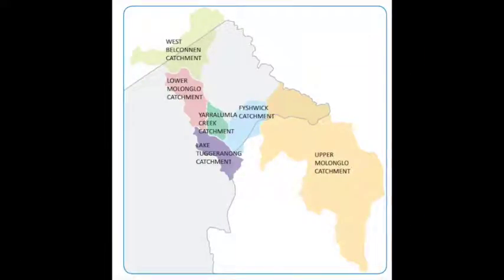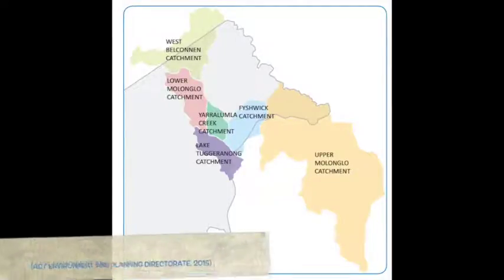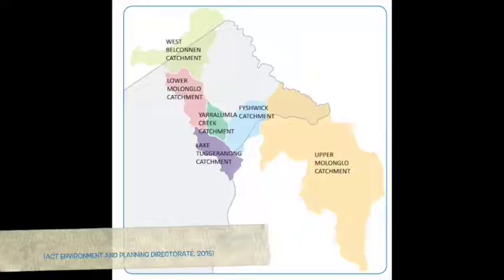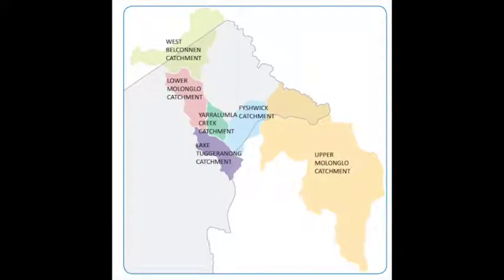The project will focus on six priority catchments. These are the Yarralumla Creek, Fishwick, Lake Tuggeranong, Upper Molonglo, Lower Molonglo and the West Belconnen. So it aims to improve the long term water quality of the waterways and lakes in the ACT and health of the Murrumbidgee River system.